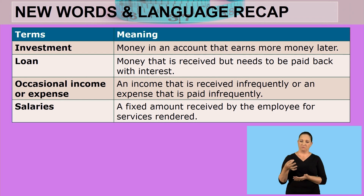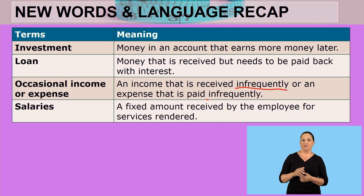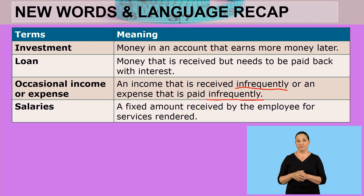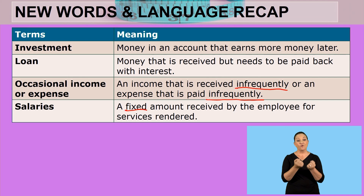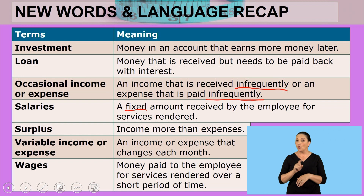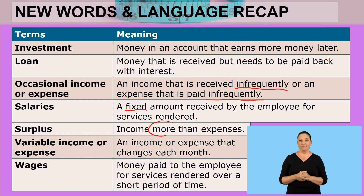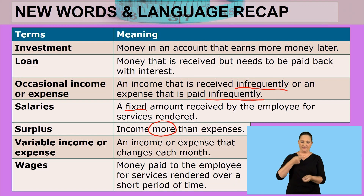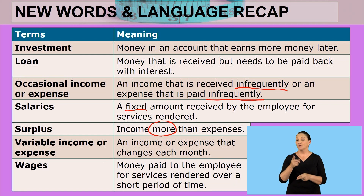Loan — money that is received but needs to be paid back with interest. Occasional income or expense — an income that is received infrequently, or an expense that is paid infrequently. Salary — a fixed amount received by the employee for services rendered. Surplus — income more than expenses.